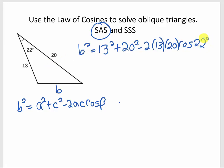Okay, so now it's just a matter of grab the calculator and compute this. I'm going to put in the square root of all that stuff, so I got the square root of 13 squared plus 20 squared minus 2 times 13 times 20 times cosine of 22, and it looks like that gives me, rounded to two decimal places, 9.32. So that's our side b.